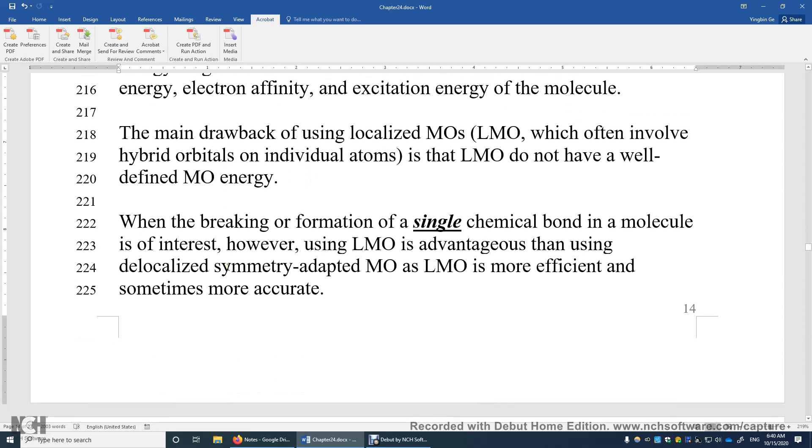However, the localized MO has its own advantages. If you would like to study the breaking or formation of just a single bond, so for example, in methane, if you are just interested in breaking one of the four bonds, it's more advantageous to just use the localized MO so that you can focus on the breaking CH bond. This is more efficient and sometimes more accurate in quantum chemistry or computational chemistry.